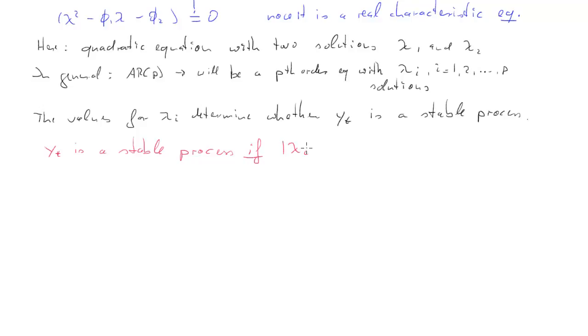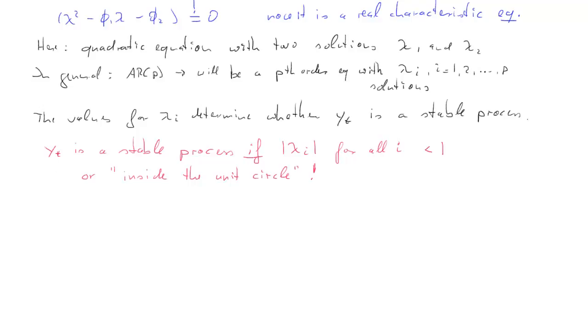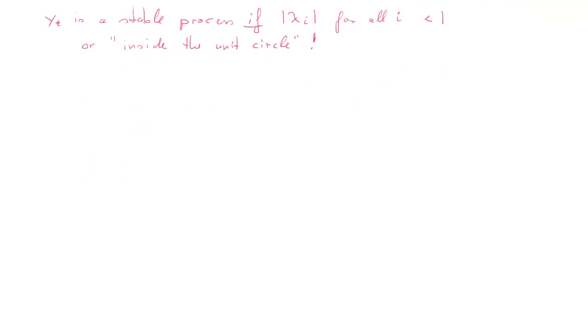So, because it's so important, this is written in red. So y_t is a stable process if the absolute value of our solutions, however many we have, so for all i, so if the absolute value for all solutions is smaller than 1. So the i will be from 1 to p, and we want the absolute value of lambda_i to be smaller than 1. Sometimes we also call that, we want all solutions to be inside the unit circle. Where that term comes from, it comes from having potentially complex solutions, but we're not going to discuss that here.